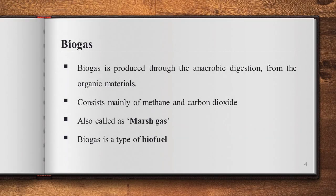The main product of anaerobic digestion is biogas. The main components of biogas are methane and carbon dioxide. Biogas is a bio-fuel and is one of the most important products of this process.